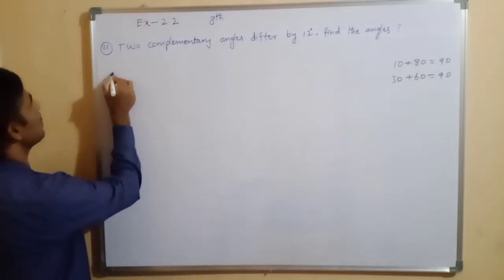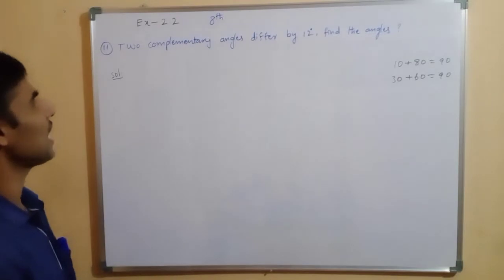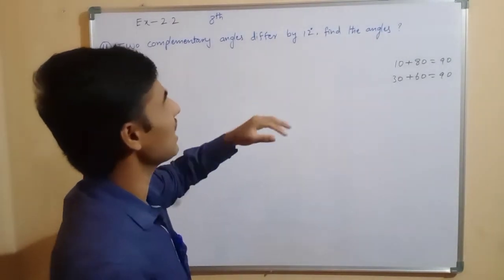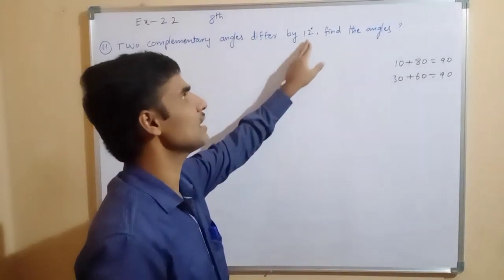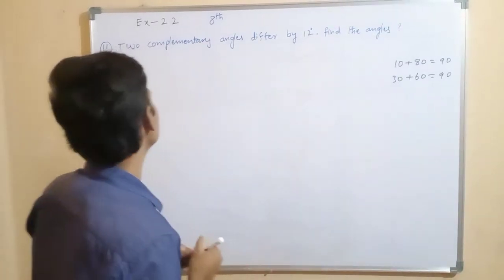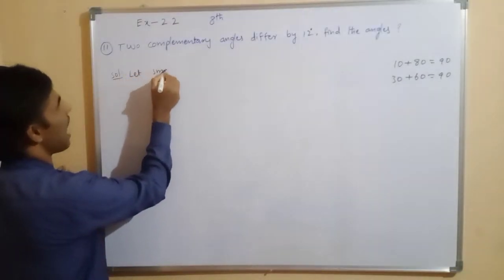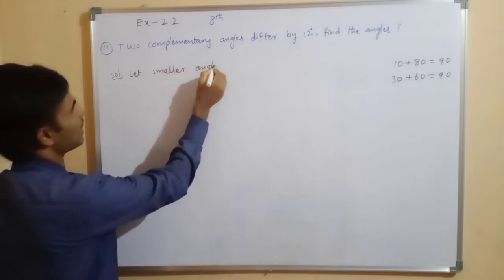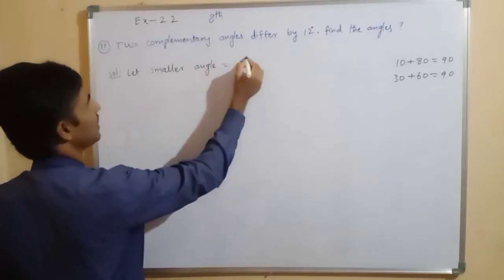See here solution. So here we have to take, let the smaller angle, two angles there, differ by 12 means what here? One angle equal to x means another angle equal to 12 extra there. Differ means 12, means x plus 12. So we have to take, let smaller angle equal to x degrees.